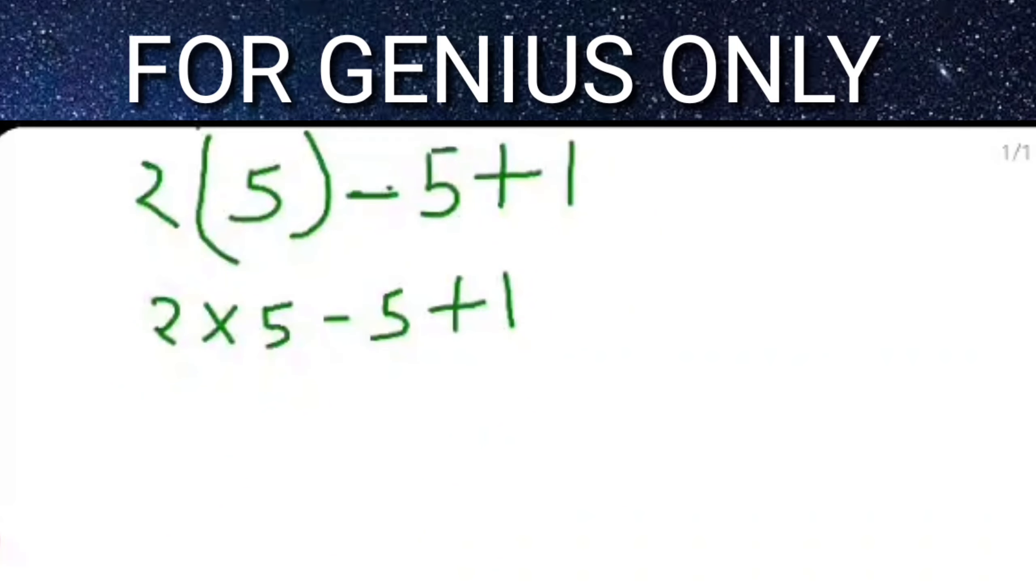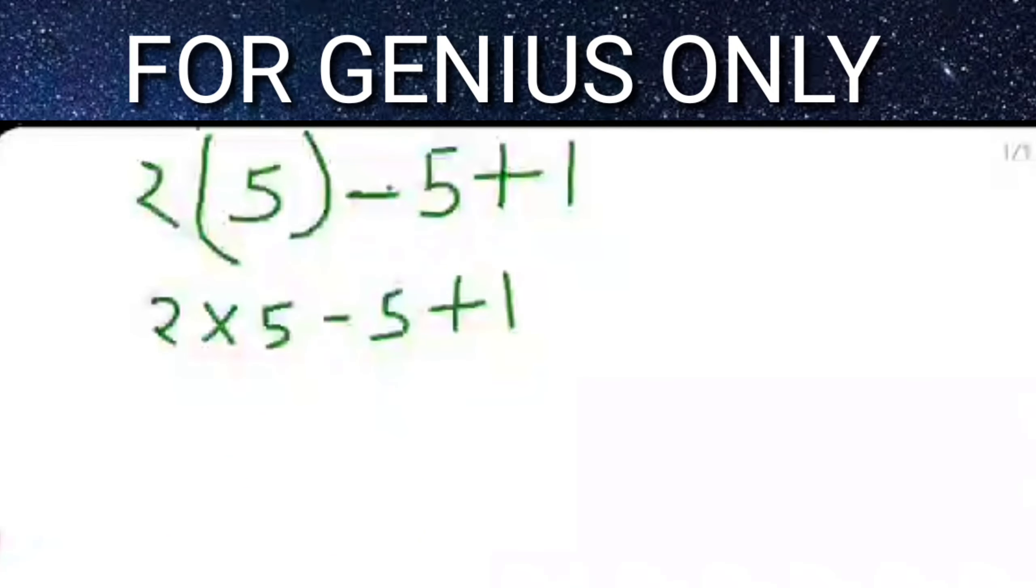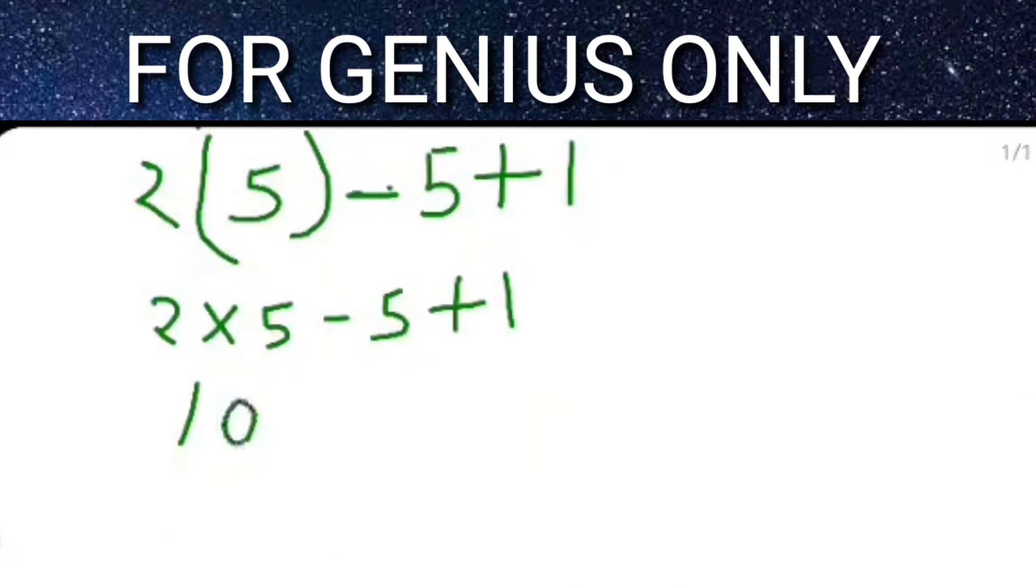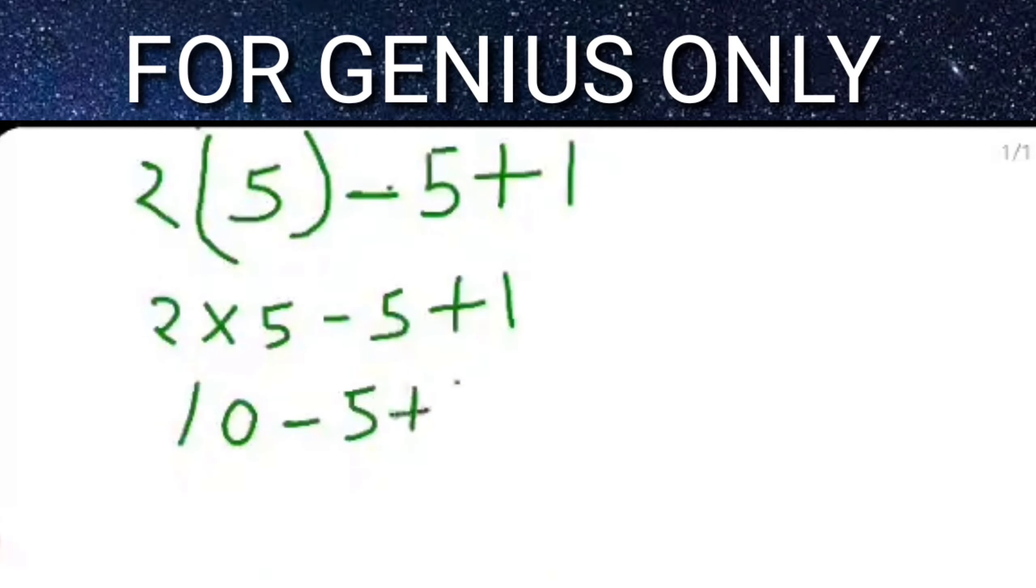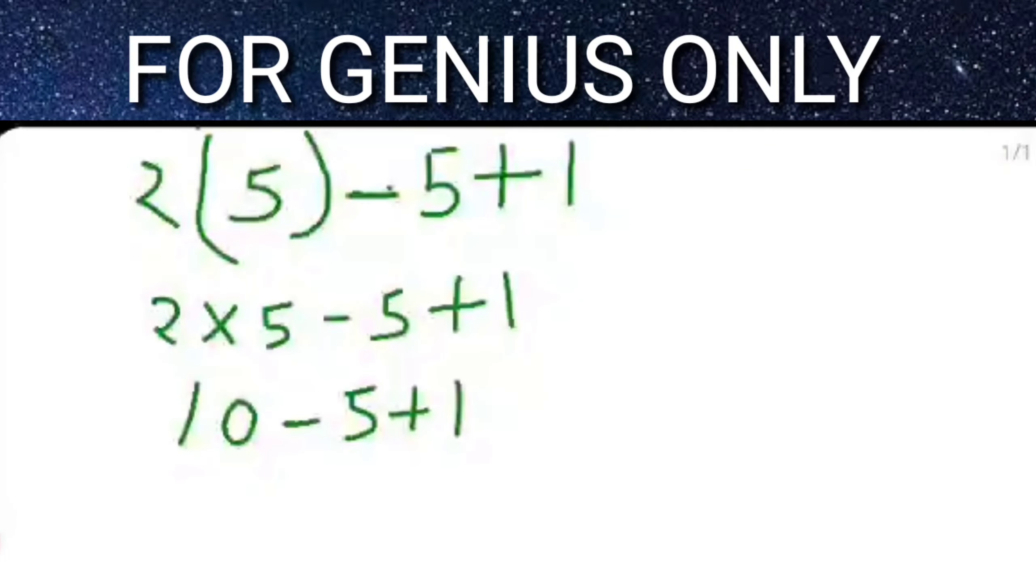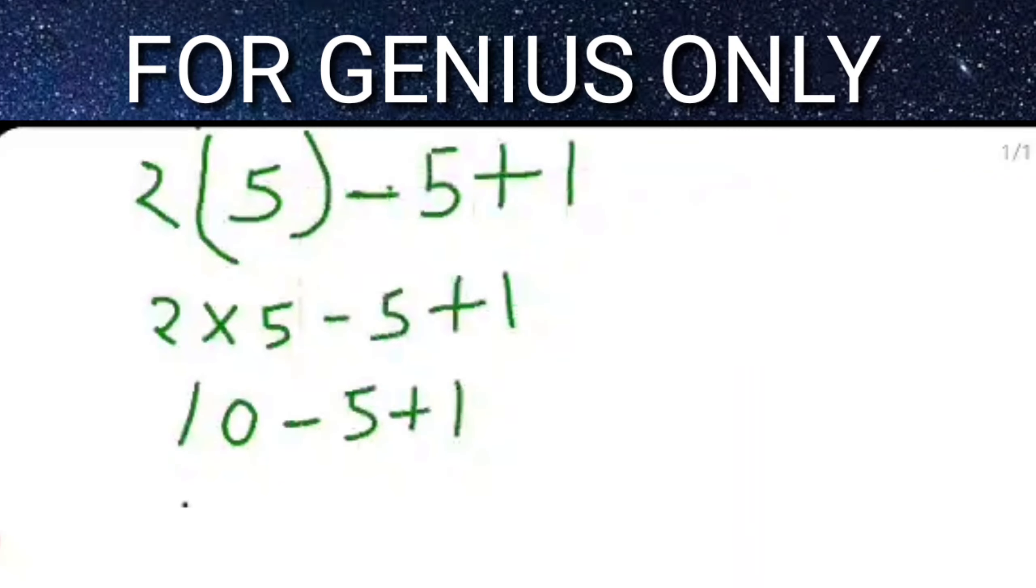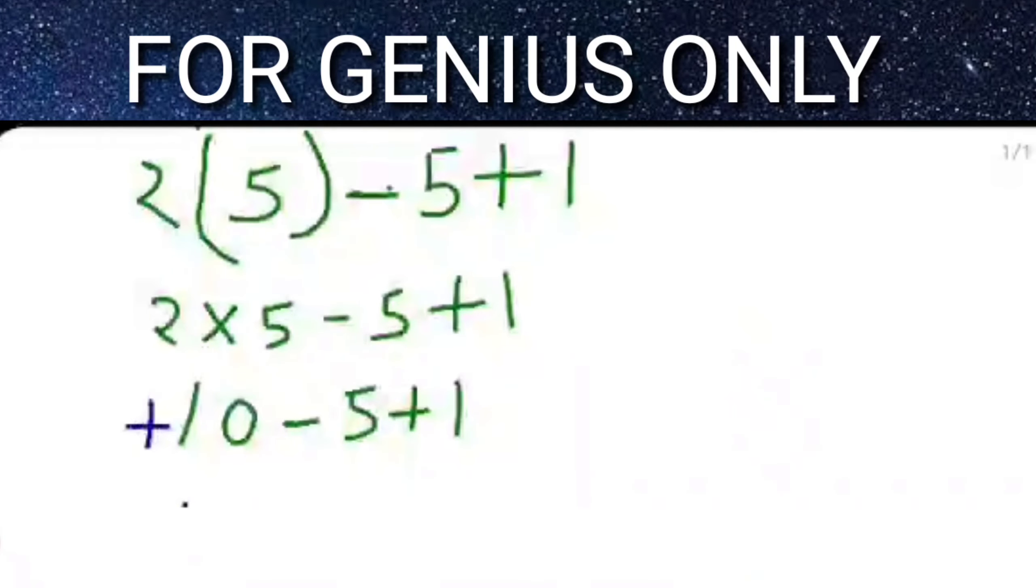I hope you understand how to solve this equation. 2 into 5 is equal to 10, minus 5 plus 1. And if anything is not available before any digit, treat that one as positive.